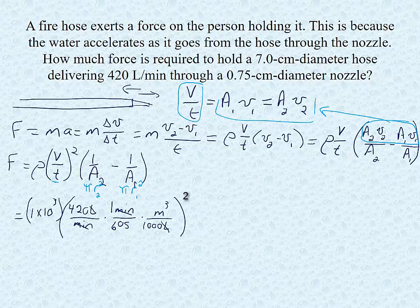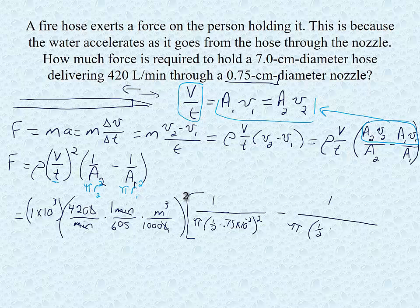And then from that we are going to multiply 1 over pi r2. So pi times 0.75 centimeters, half of that, then change to meters then squared. So one half times 0.75 times 10 to the negative 2 squared minus 1 over pi times one half of 7 times 10 to the negative 2 squared.